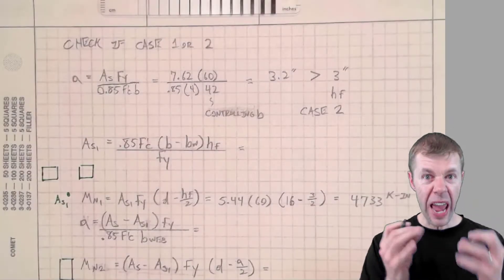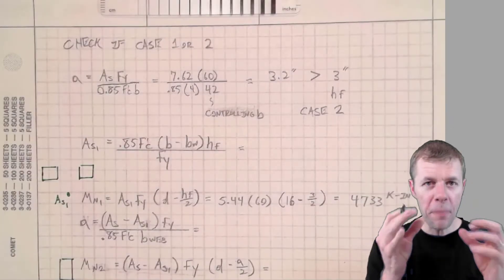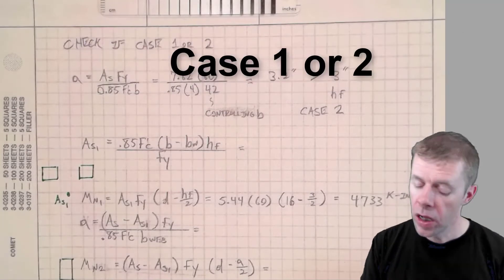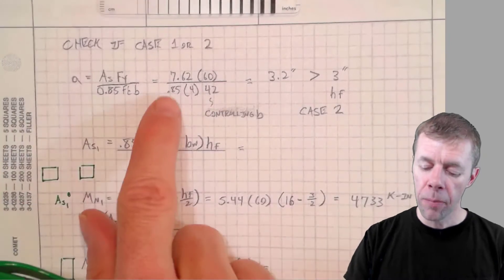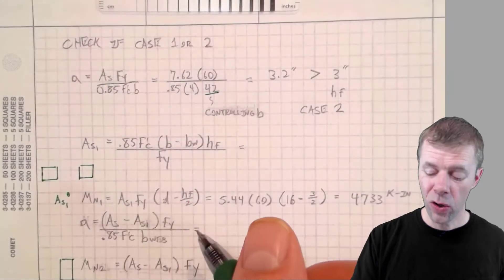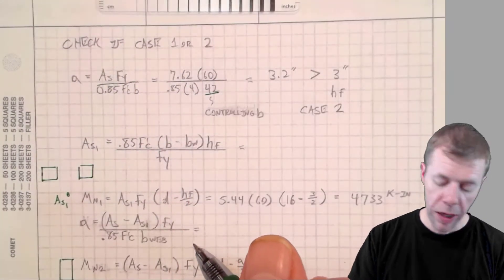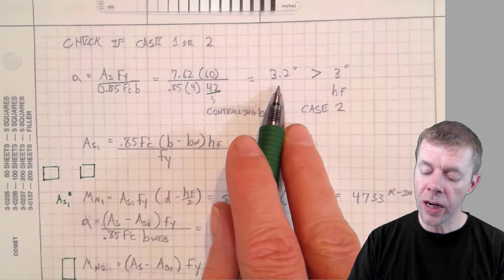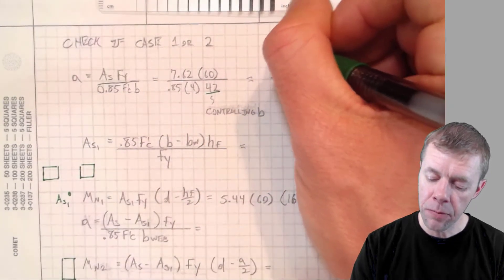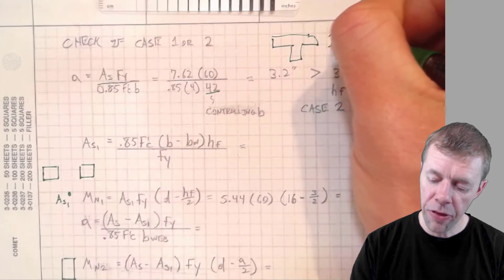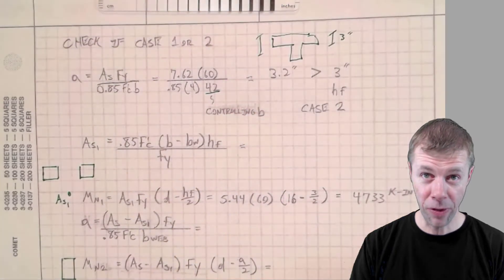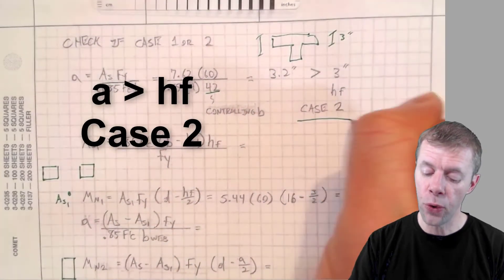Now we've got to calculate that A. This is that mythical mystical A that determines if we're in case one or case two. So I calculate my A, plug in everything I know. That was my B that controlled, or I called the controlling B. And I figured out my A, 3.2 is greater than HF. I'm saying that my top of my T beam is three inches in depth and my compression block is deeper than that. Uh-oh, that means I'm in case two.